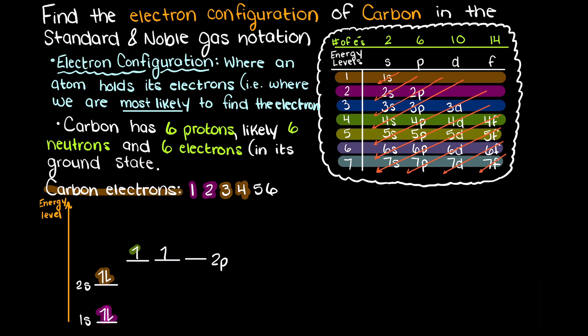So just remember Hund's rule, which states that each electron will occupy their own orbital before spin pairing with another electron. So our remaining 2 electrons can go in any of these 2p orbitals as they are all equivalent energy states.